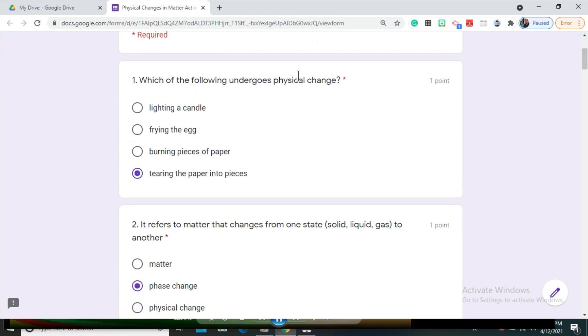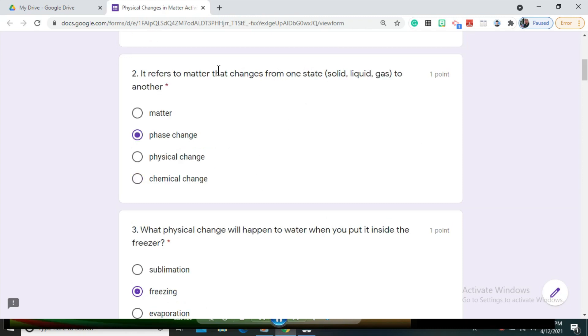Question number one: which of the following undergoes physical change? The correct answer is tearing the paper into pieces. Question number two: it refers to matter that changes from one state solid, liquid, gas to another. The correct answer is phase change.